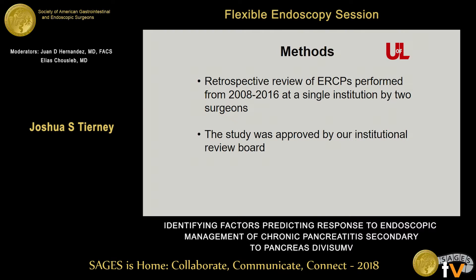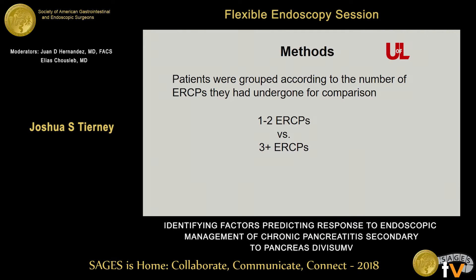We reviewed our ERCPs from 2008 to 2016, performed by two surgeons at the University of Louisville. The study was approved by our IRB. We grouped patients into two groups: one to two ERCPs versus three or more ERCPs. The rationale is that a patient who responds initially will undergo one or two ERCPs — one to do the intervention and place a stent, the second to remove it — versus three or more ERCPs for someone who fails to respond initially and requires subsequent interventions. Our hypothesis was that the three-plus ERCP group would be more likely to require eventual surgical intervention.